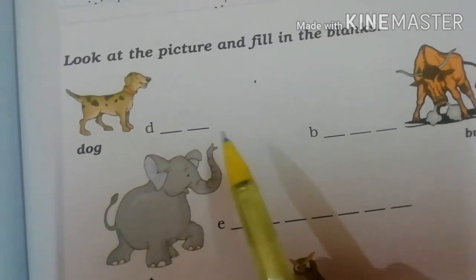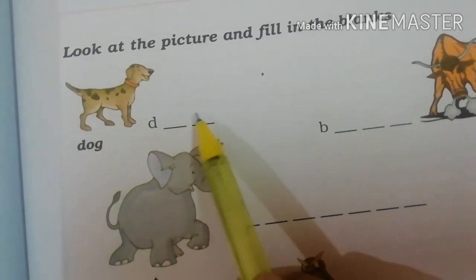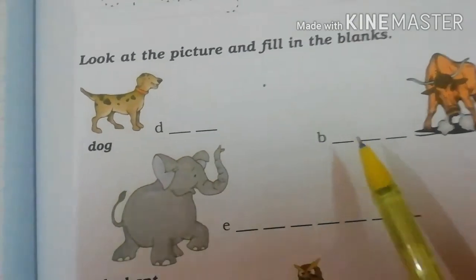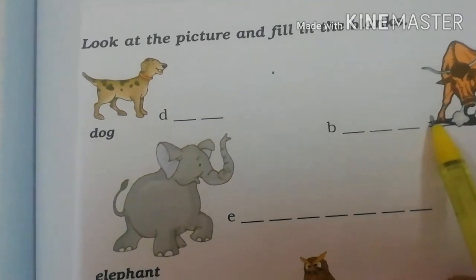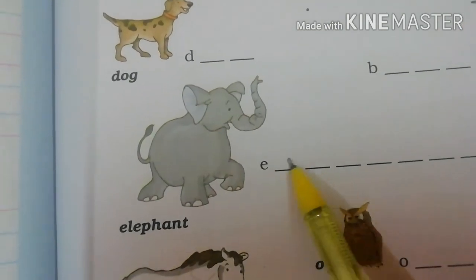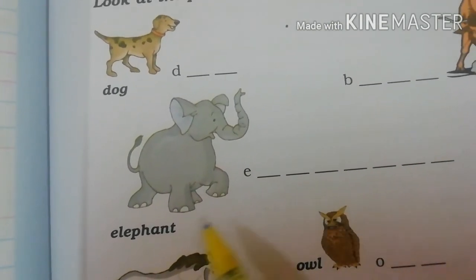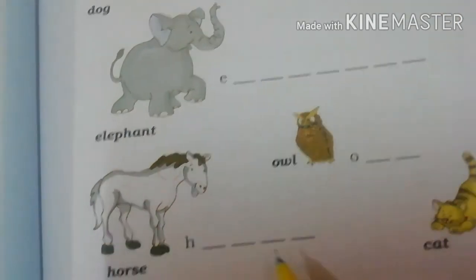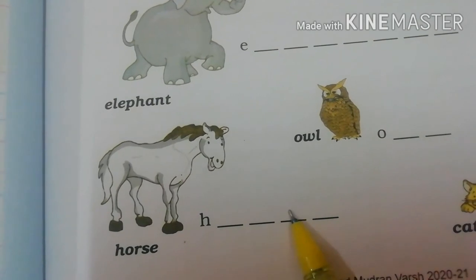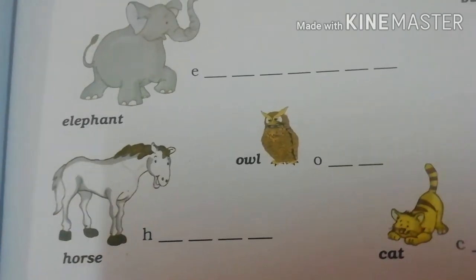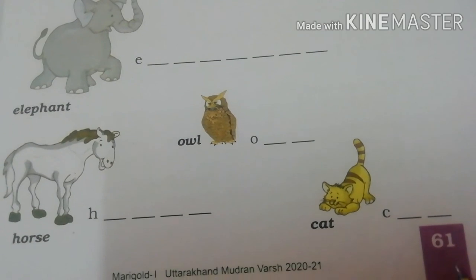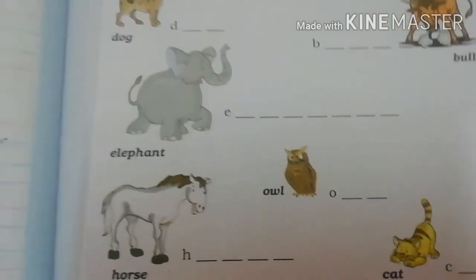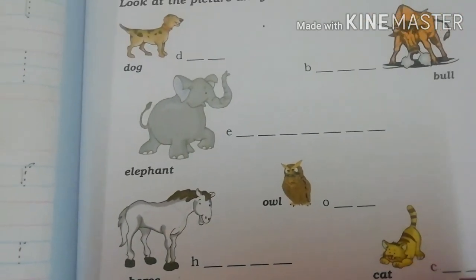Now look at the picture and fill in the blanks. You have to fill it yourself. D-O-G Dog. B-U-L-L Bull. E-L-E-P-H-A-N-T Elephant. O-W-L Owl. H-O-R-S-E Horse. C-A-T Cat. This exercise also you have to do in your book.